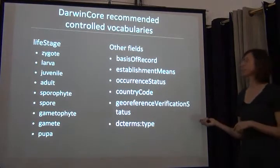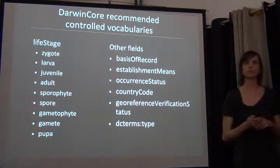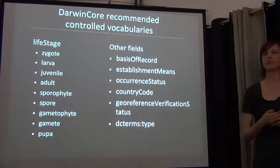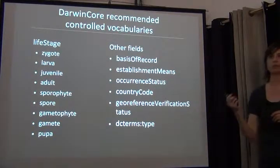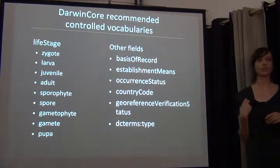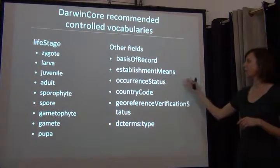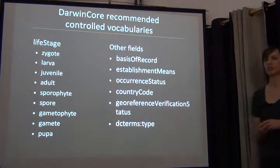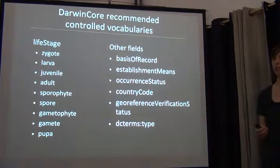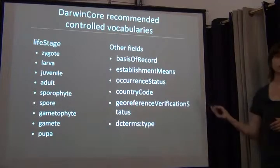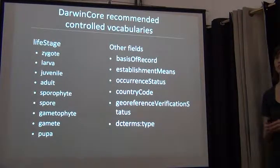When you want to use international standards like Darwin Core, within certain fields there are recommended vocabularies. As you go through your mapping, you may have noticed that many terms had recommended vocabularies — for example, the recommended terms for life stage, and many other fields you went through this morning also had recommended vocabularies. As you're developing your own data structure, you'll want to pay attention to which fields had a recommended vocabulary and try to use or embed those as a lookup list in your own database.